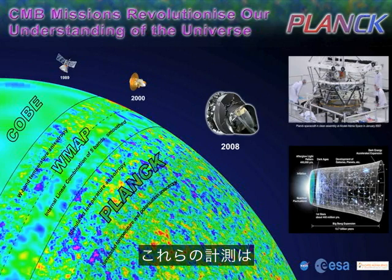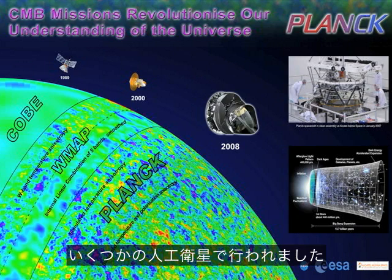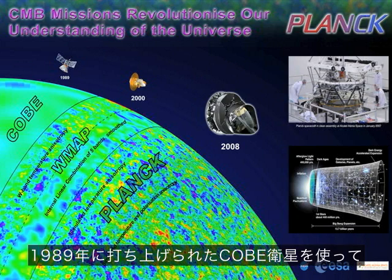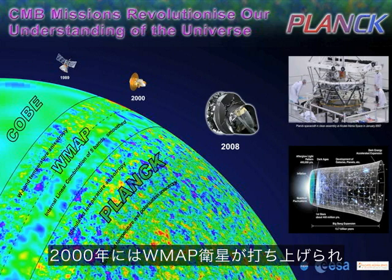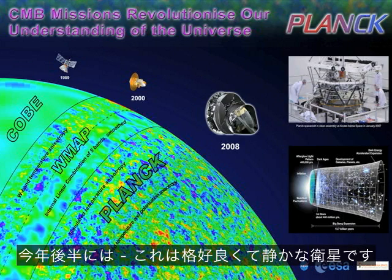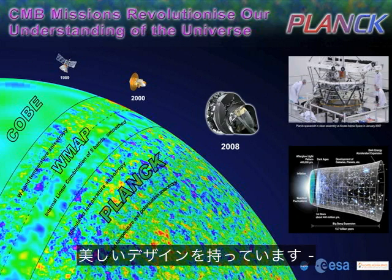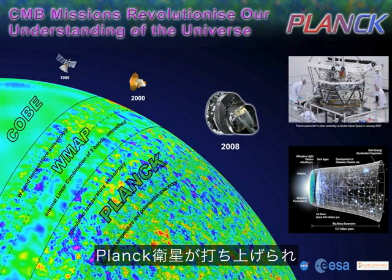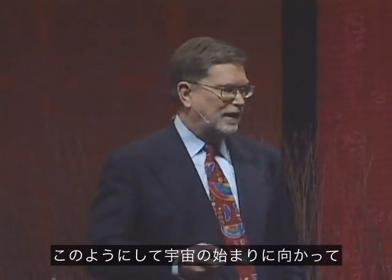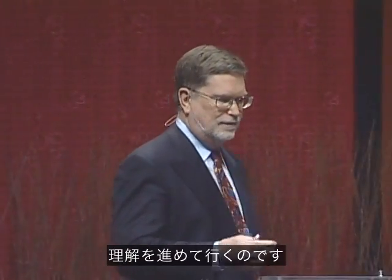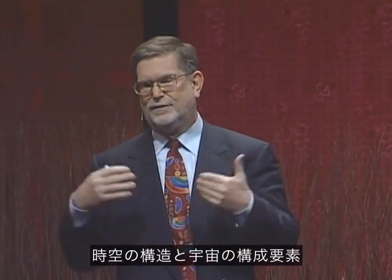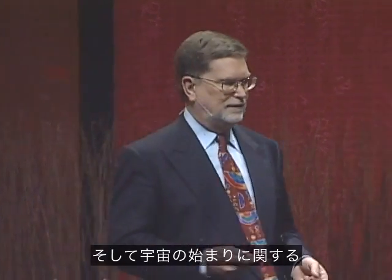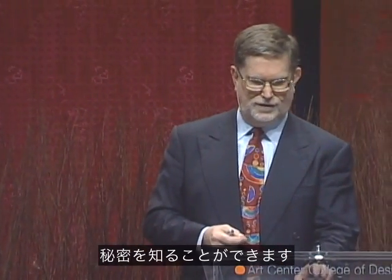The measurements were done using a set of satellites. There was the COBE satellite, launched in 1989, with which we discovered these variations. Then in 2000, the WMAP satellite was launched and made somewhat better pictures. Later this year, the Planck satellite will be launched — it has some beautiful design features and will make very high-resolution maps. That will advance our understanding of the very beginning of the universe. These variations told us secrets about the structure of space-time, the contents of the universe, and how the universe started in its original motions.